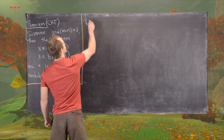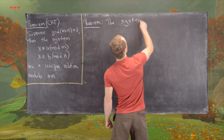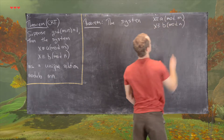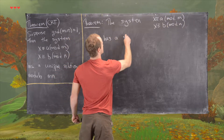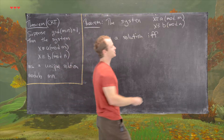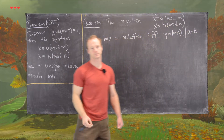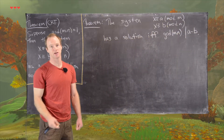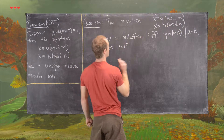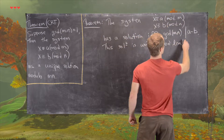The statement of that result goes as follows. The system given by X is congruent to A mod M and X is congruent to B mod N has a solution if and only if the GCD of M and N divides A minus B. And if there is a solution, this solution is unique modulo the least common multiple — that is, unique mod the LCM of M and N.